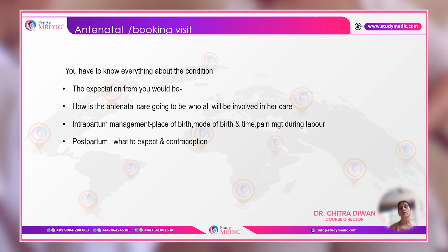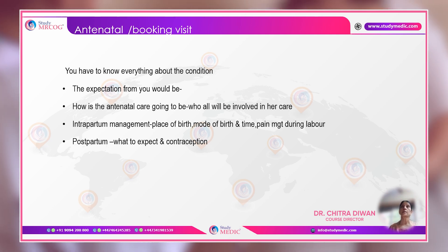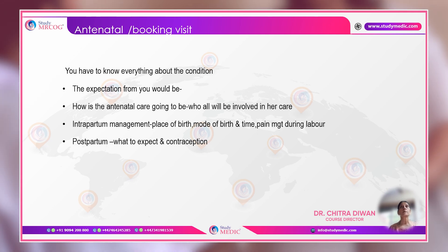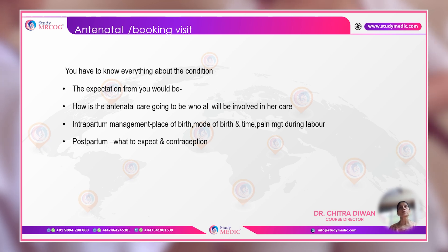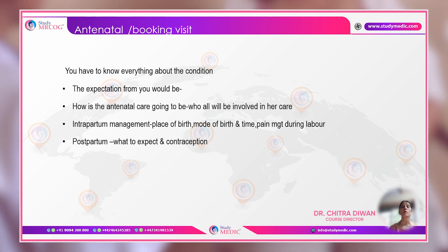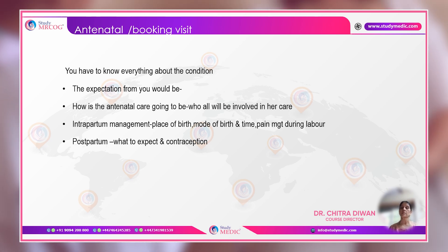You also have to talk about intrapartum management: the place of birth, the mode of birth - whether vaginal birth is contraindicated or indicated - pain management during labor, any drugs that are contraindicated, and how labor is going to be managed. For example, a woman with type 1 or type 2 diabetes needs to be induced between 37 to 38+6 weeks, whereas someone with well-controlled GDM can go up to 40+6 weeks.